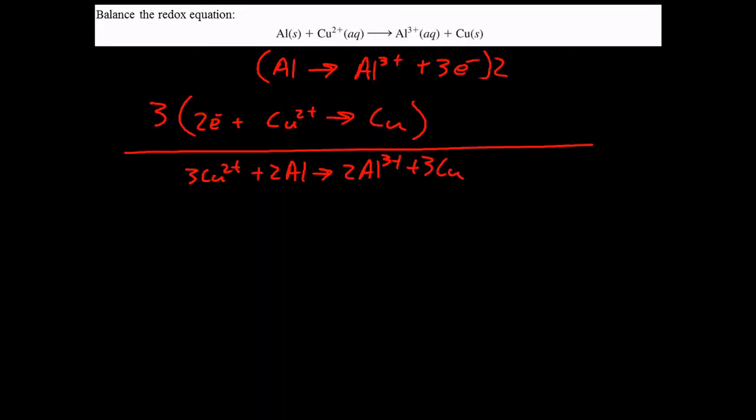Three copper two plus, plus two aluminum goes to two aluminum, three plus, and three coppers. So it is still balanced according to mass, but now it is also balanced according to the charge.